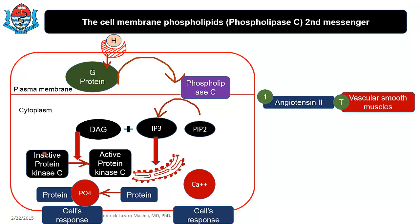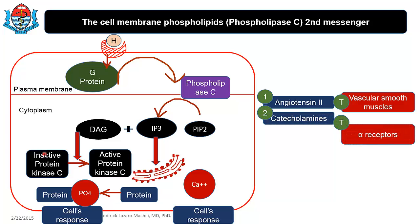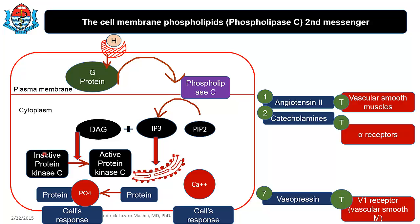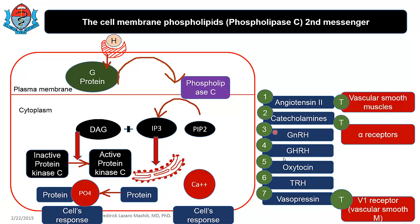Examples of hormones using this system: angiotensin 2 when it activates receptors in vascular smooth muscle; catecholamines when they activate alpha receptors — note the differences compared to the adenylyl cyclase/cyclic AMP system; vasopressin in vascular smooth muscle, not in epithelial cells. You also have the hypothalamic releasing hormones and the hormones of the posterior pituitary, which are secreted by the posterior pituitary but synthesized by the hypothalamus. Note the receptor-specific differences for angiotensin 2, catecholamines, and vasopressin.